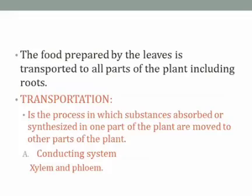The leaf takes in carbon dioxide from the atmosphere. Water along with minerals is absorbed from the soil through the roots, and then transported upwards to the leaves of the plant. The leaves take carbon dioxide from the atmosphere and water and minerals from the soil through the roots, and as a combination they prepare the food, which is then transported from the leaves to other parts of the plant.